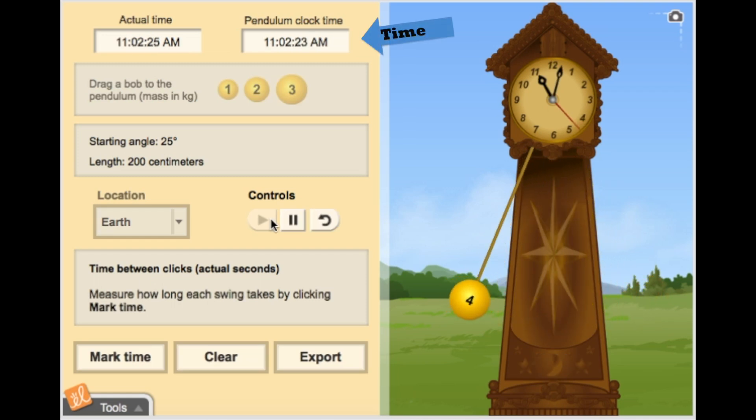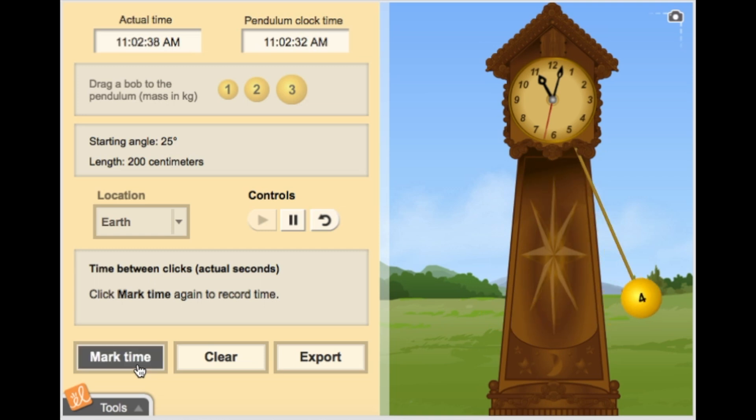What do you observe with the actual time and the pendulum time found at the top of the gizmo? You can click mark time when the pendulum reaches its farthest point to the right, and then again to the left to determine and record the time it takes to swing.